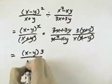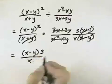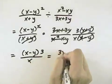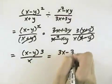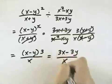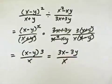In the denominator, that leaves an x. If we multiply the 3 through, we get 3x minus 3y all over x as the simplified form of our answer.